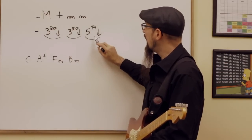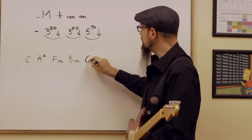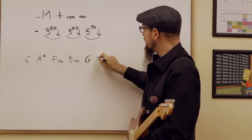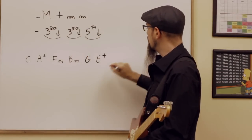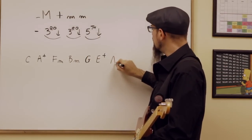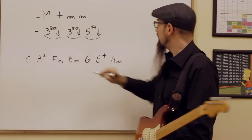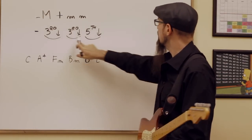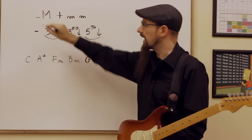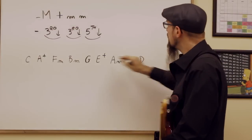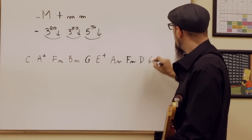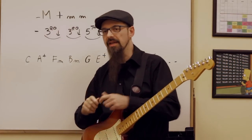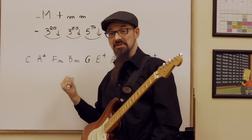Then I keep going. Down a third from B I get a G, and I'm restarting the quality sequence, so I get G major. Down another third I get an E — augmented. Down a fifth I get an A — A minor. Down a third I get an F — F minor. Then it's a fifth, so I get a D — D major. And the next is down a fifth from D which is G — G augmented. I can stop whenever I want, or just keep going. This is the chord progression I used in that piece — no more, no less.